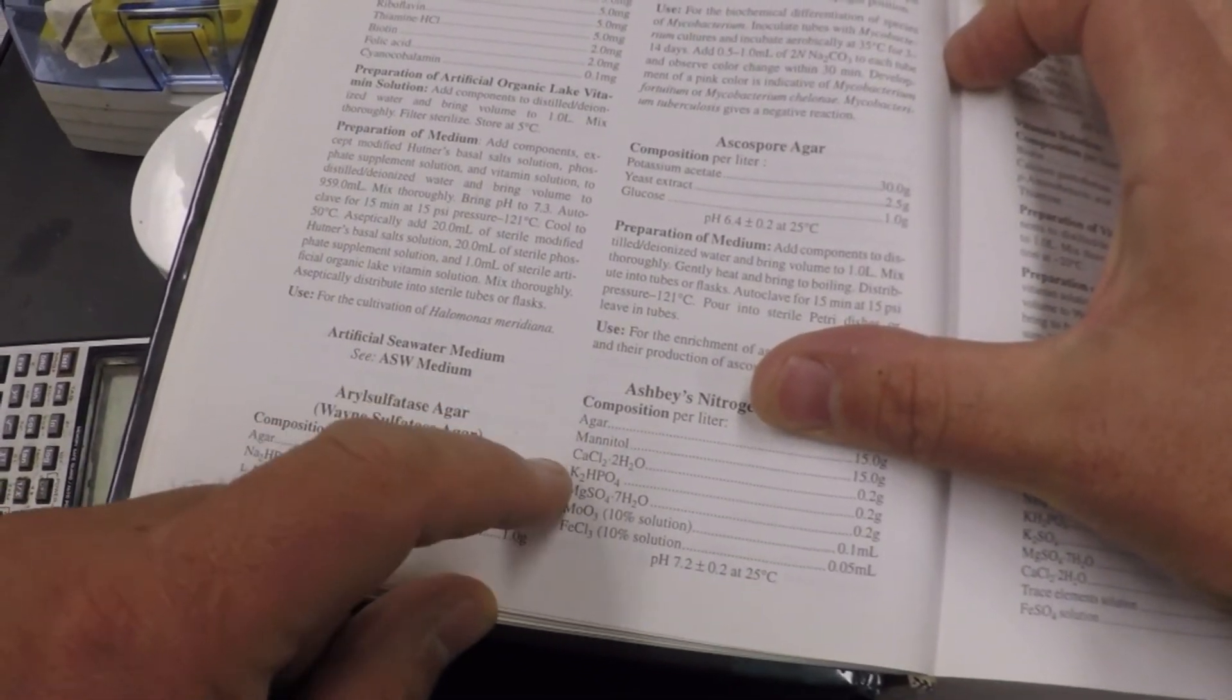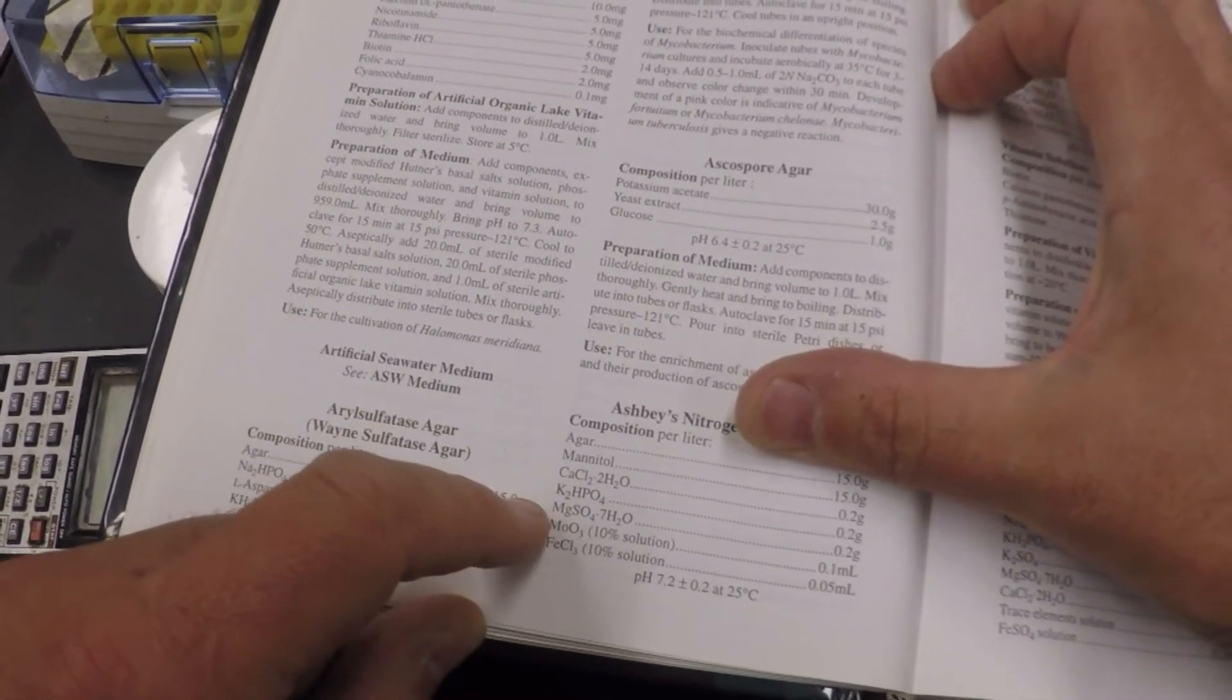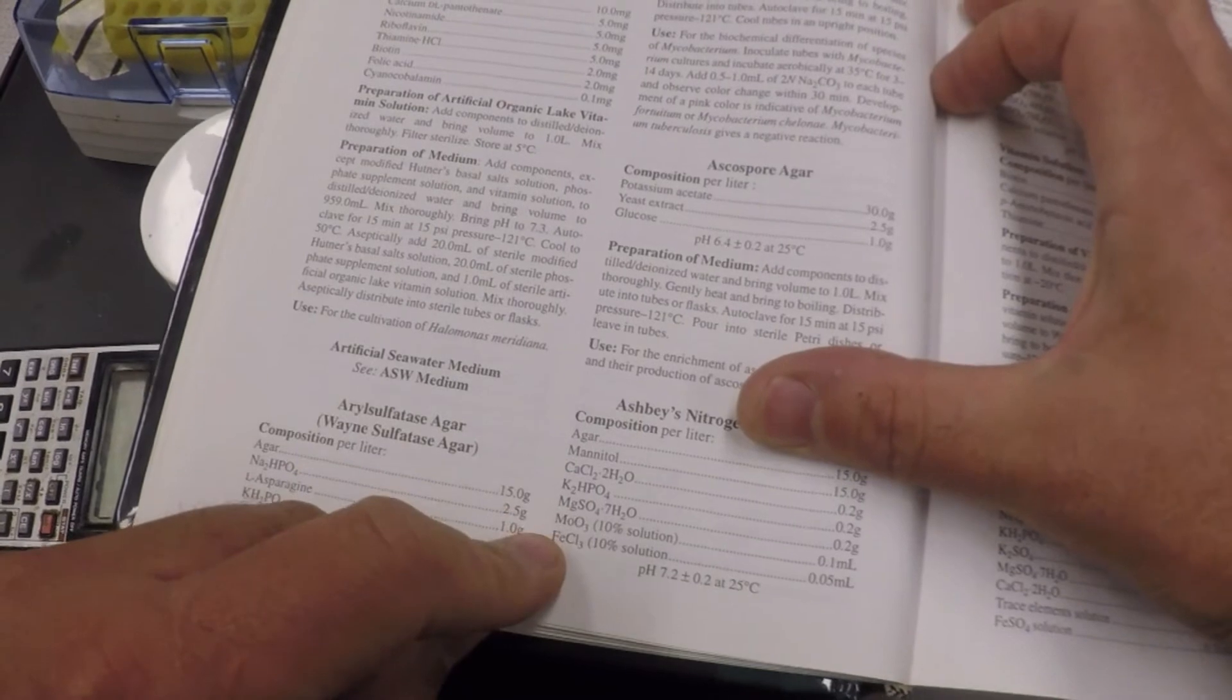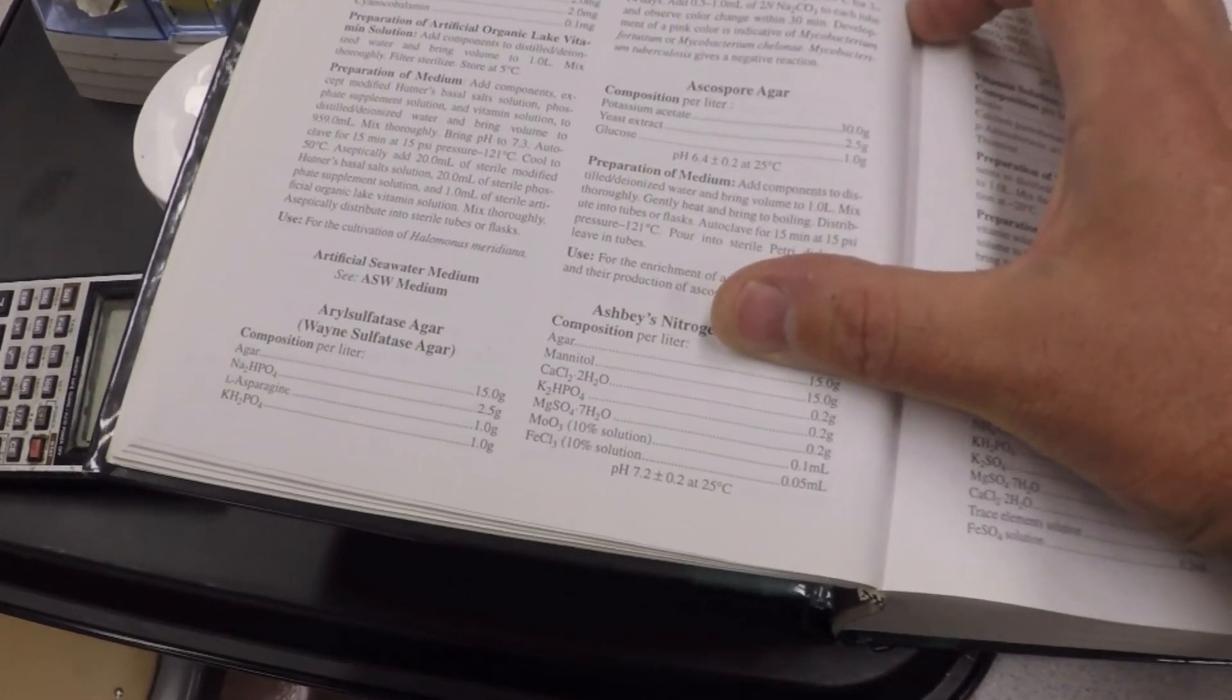calcium chloride, potassium, magnesium, molybdic stuff, iron. What is missing in that formula? What is missing in an organism that needs something?